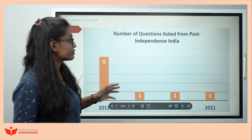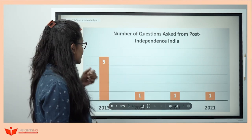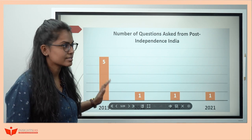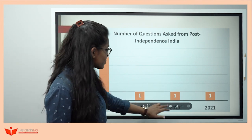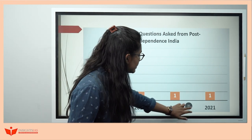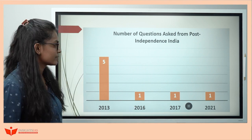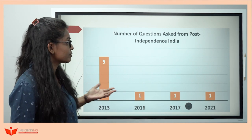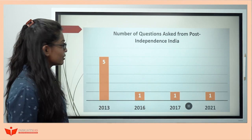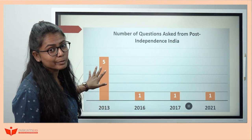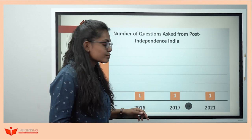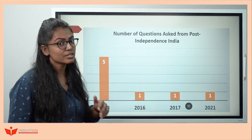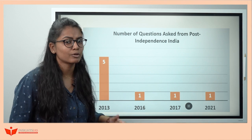Let's analyze the trend of how important post-independence is. From 2013 to 2021, in 2013 they asked 5 questions, then nothing, then in 2016 they asked 1, 2017 they asked 1, and in 2021 they asked 1. You might be confused about how to go about this topic or even think of skipping it. But hold on — what if we get 5 questions next year? I call it a 'constipated topic' because input is way too much but output is so little.